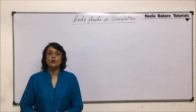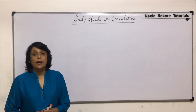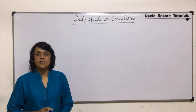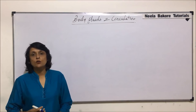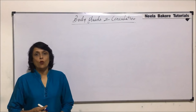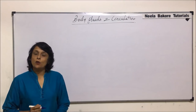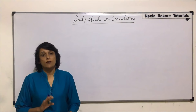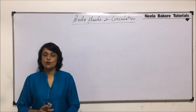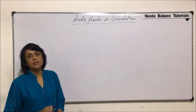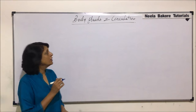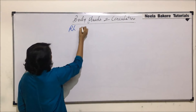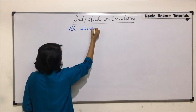In this section, we'll talk about RH incompatibility. In the previous segments, we have seen the blood groups A, B, O blood group system and ABO incompatibility in both situations. The first situation was when transfusion takes place and the second situation is from mother to the fetus. Now, we want to discuss RH incompatibility.